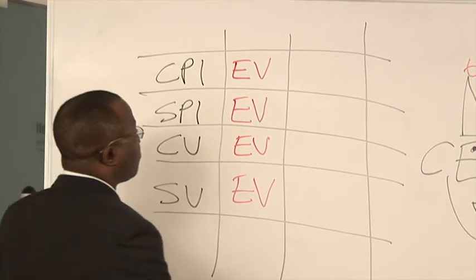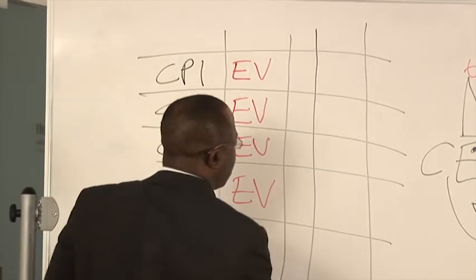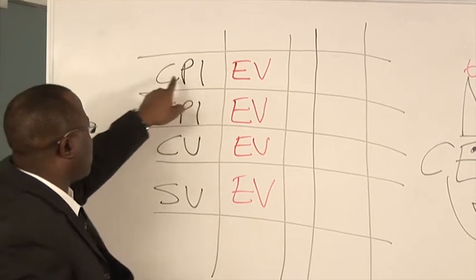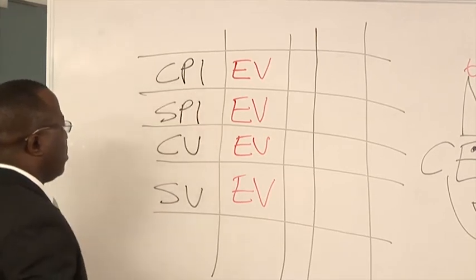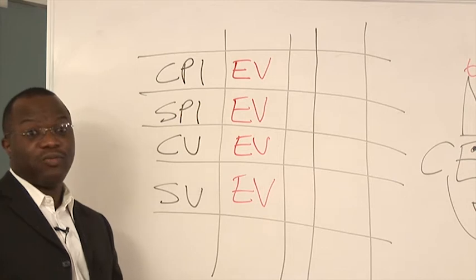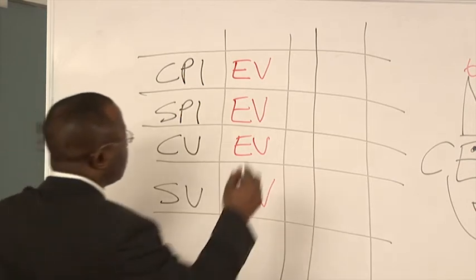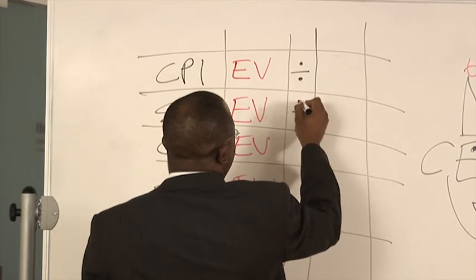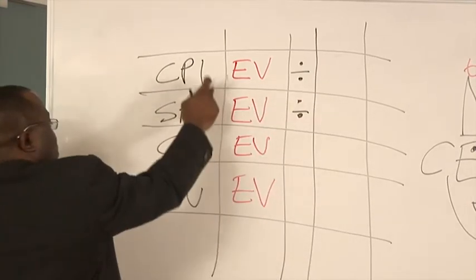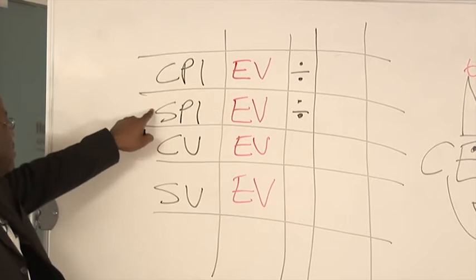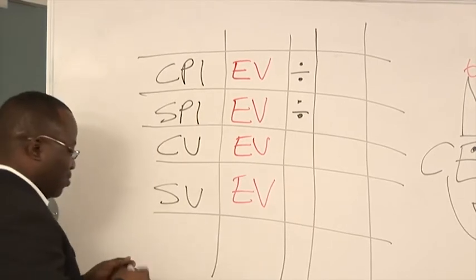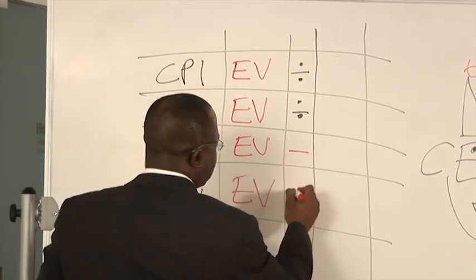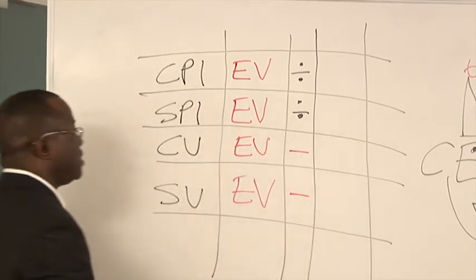You also need to remember basic math. If we're talking about an index, cost performance index. If we're talking about an index, what do we do? We divide. So we're gonna put divide here and divide here. Because this is an index, cost performance index. If we're talking about a variance, what do we do? We subtract. Variance subtracts. That's easy.